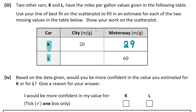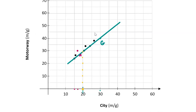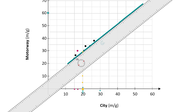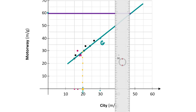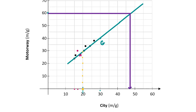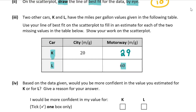For car L, the motorway fuel consumption is 60 miles per gallon and we need to find the city value. The line of best fit doesn't reach 60, so we extend it. Going across from 60 on the motorway axis until it hits the extended line of best fit, then dropping straight down to the x-axis, it arrives between 45 and 50 — so approximately 47 miles per gallon in the city. That's part three done.